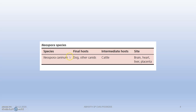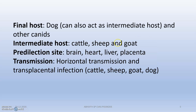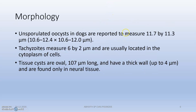The final host of Neospora caninum is the dog and other canids, and the intermediate hosts are cattle. The site of infection includes the brain, heart, liver, and placenta.